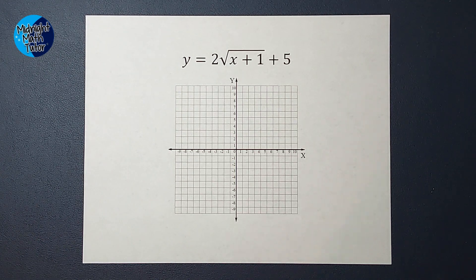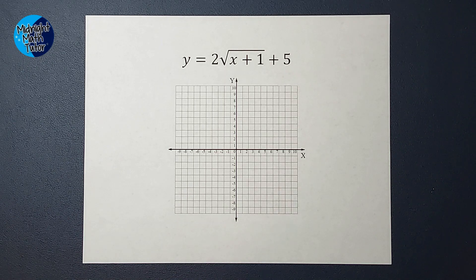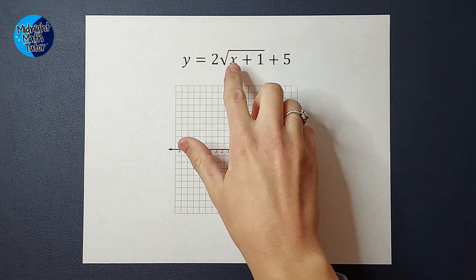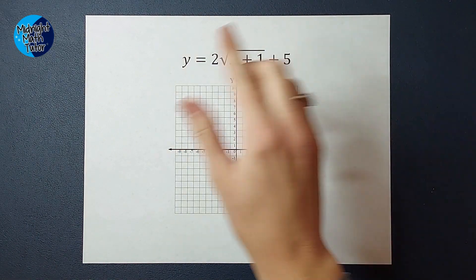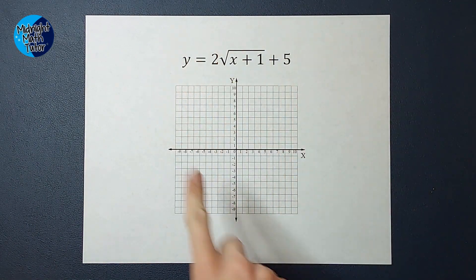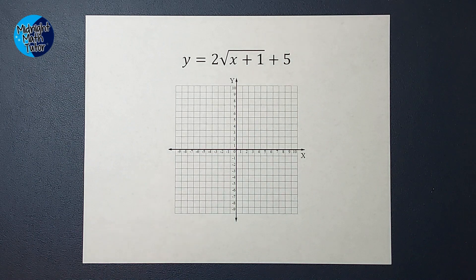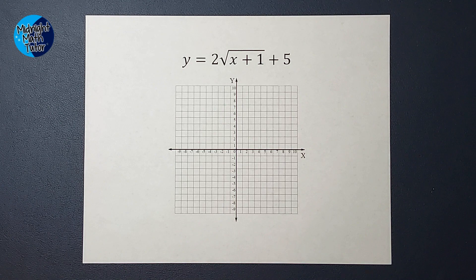We are going to graph an equation with a square root in it today. Whenever I'm graphing anything, I can always pick a number for x, plug it in, get a y, and then graph that point. That's always an option — it's just not always the most efficient option. We don't always know which numbers to plug in.